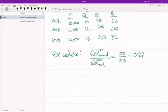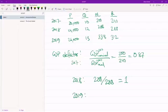If we do it for all three years, so this was for 2017. For 2018, the GDP deflator will be obviously 288,000 divided by 288,000. That gives us 1. And for 2019, we're going to get 338,000 divided by 312,000. That gives us 1.0833.